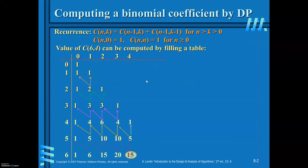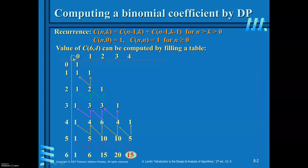I will take the instance C(6,4) as an example. We will see how to apply the recurrence relation and fill the table. Since n is 6 and k is 4, the table should contain 7 rows and 5 columns, because the indices start from 0.